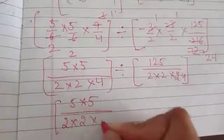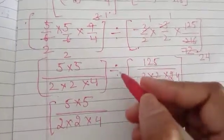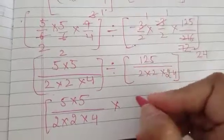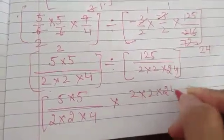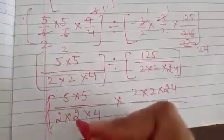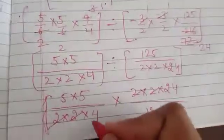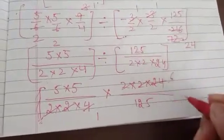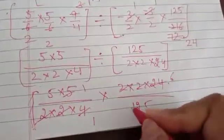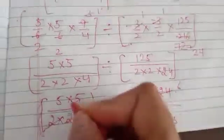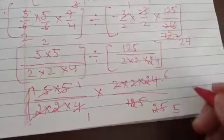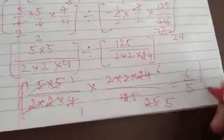I know it's a bit lengthy. Now change this division sign into multiplication and do the reciprocal of the fraction. So it becomes 2 into 2 into 24 over 125. 2 and 2 will be cancelled with both 2s. 4 ones are 4, 4 sixes are 24. 5 ones are 5, 25 fives are 125, 5 ones are 5, 5 fives are 25. And we got 6 over 5 as the answer.